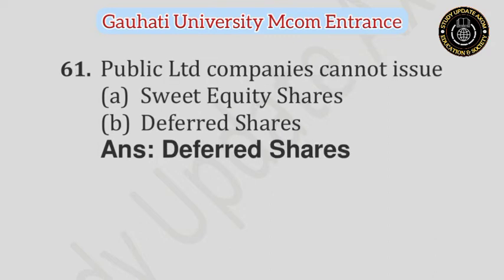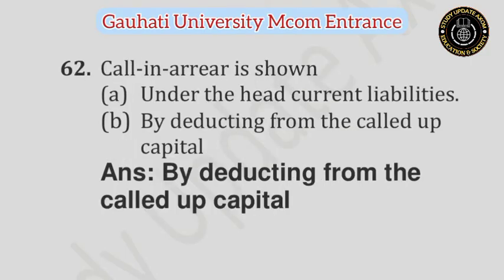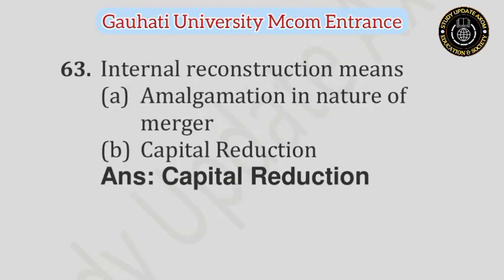Question number 61: Public limited company cannot issue — Option A: Sweat equity shares, Option B: Deferred shares. Answer is Deferred shares. Question number 62: Calls in arrears is shown — Option A: Under the head current liabilities, Option B: By deducting from the called up capital. Answer is By deducting from the called up capital. Question number 63: Internal reconstruction means — Option A: Amalgamation in the nature of merger, Option B: Capital reduction. Answer is Capital reduction.